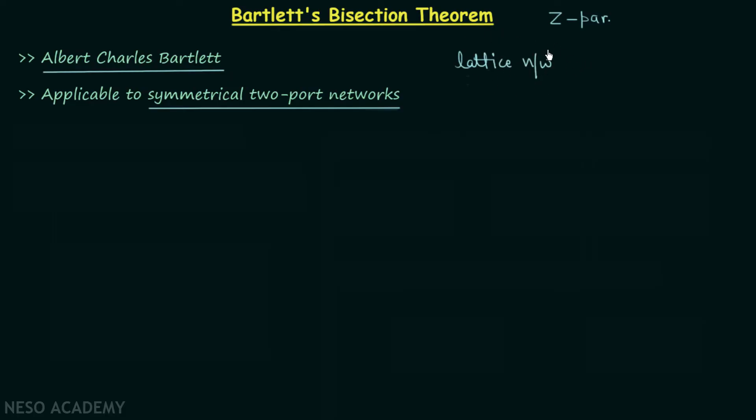Now what do we mean by a lattice network? A lattice network is a two port electrical wave filter in which diagonally crossed shunt elements are present. Shunt elements are devices offering a low resistance path.